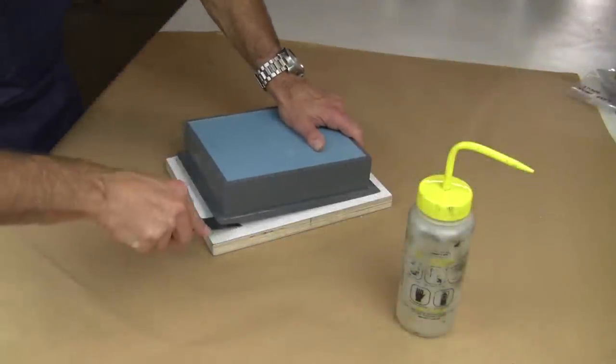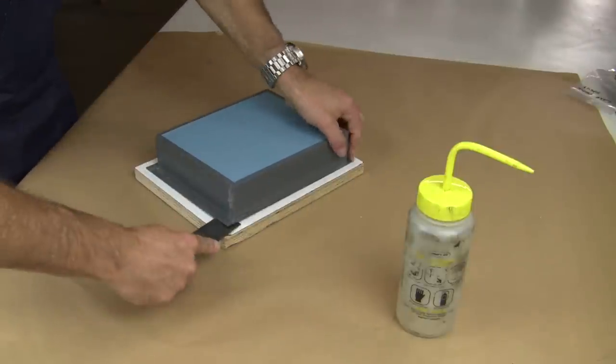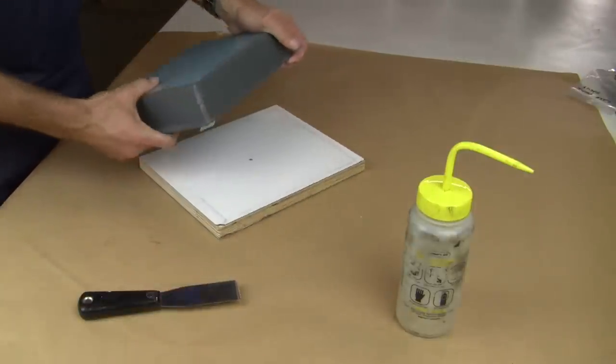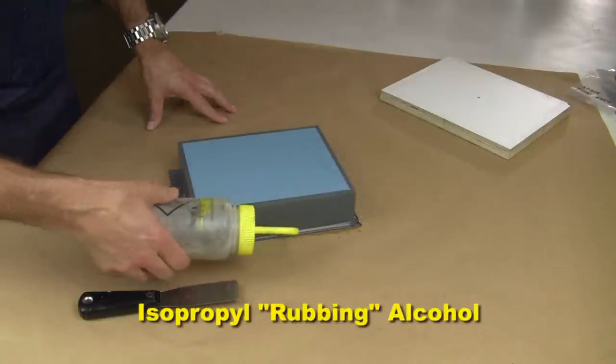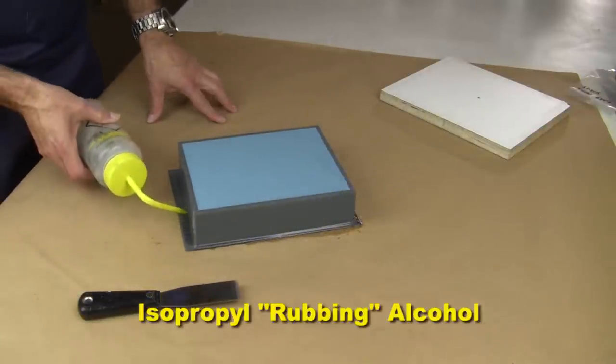After sufficient cure time of the silicone, we begin to remove the splitter board. A good tech tip is the use of isopropyl alcohol to loosen the bond of the hot glue.